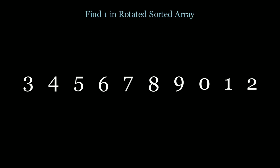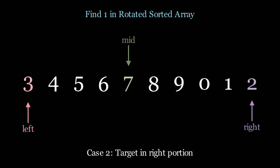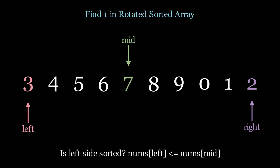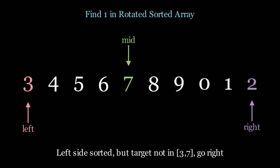Now let's take a look at case 2. I want to find the target 1, which is in the right portion of the array. We initialize left, right, and mid pointers. We ask the same question: is the target equal to mid? No. Is the left side sorted? Yes. But is my target within the range of the left side? No — the left side is sorted with range 3 to 7, but target 1 is not within 3 to 7. So our only chance to find a solution is going to the right-hand side. Let's move the left pointer.